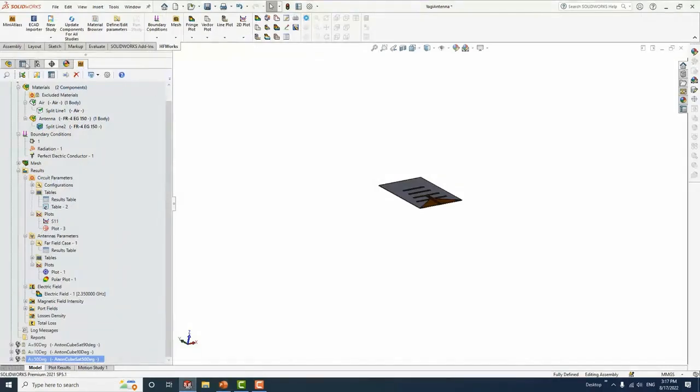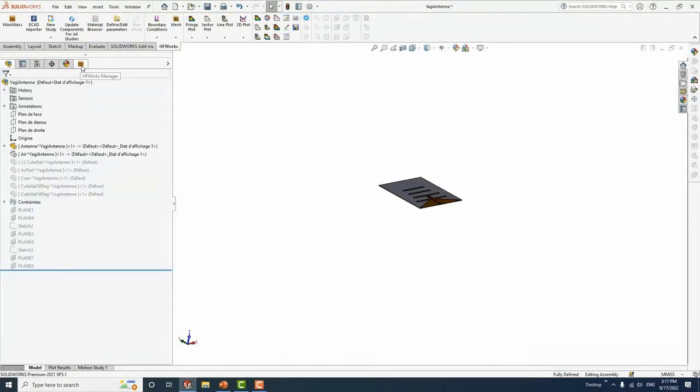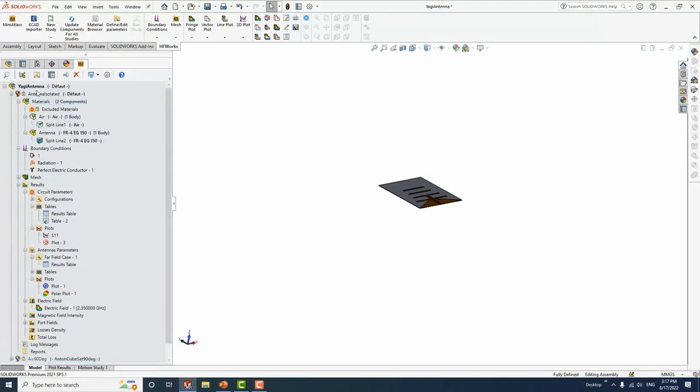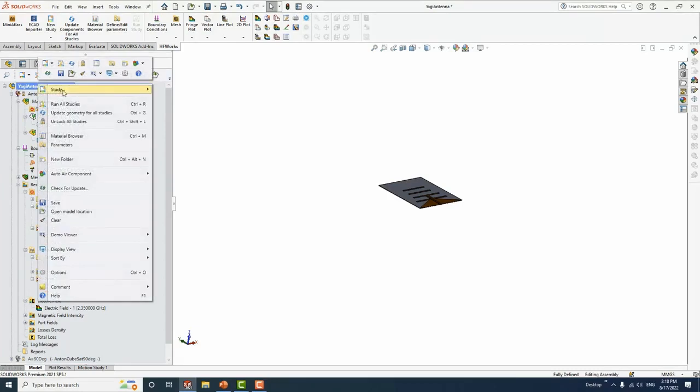Now how to simulate such antennas using HFWorks. HFWorks is fully embedded in SOLIDWORKS and is Gold certified by SOLIDWORKS. So when you are done creating your geometry in SOLIDWORKS, you can just go ahead and start your simulation in HFWorks. It's simply just a tab. Basically you don't need to import any CAD. In HFWorks we have four types of study: antennas, S-parameter, TDR, and resonance. But today we'll be focusing on antennas.